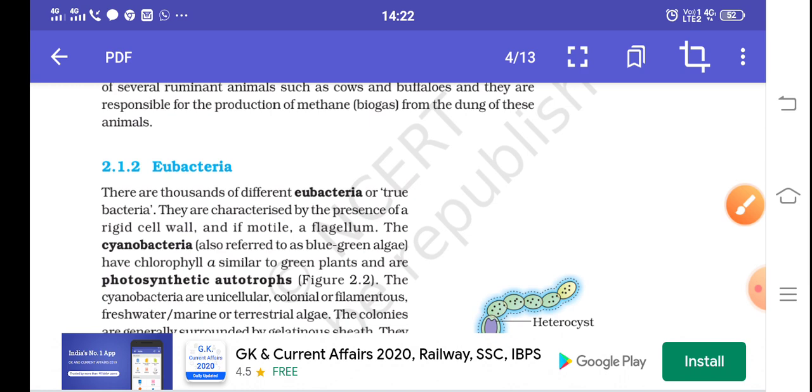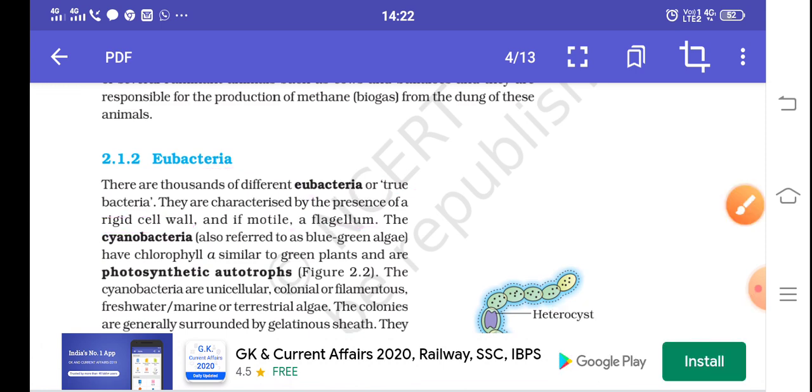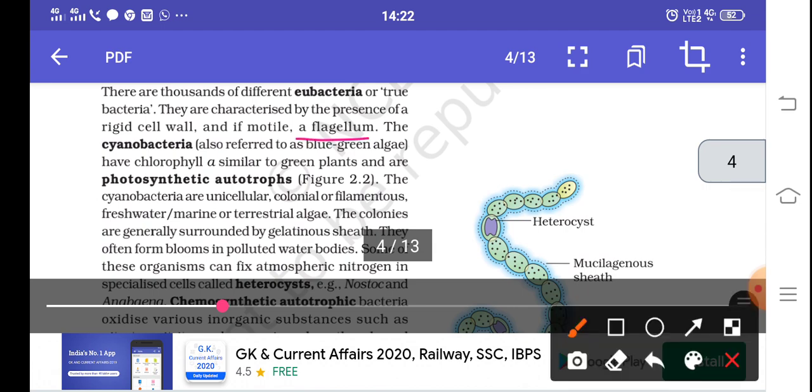Now let us discuss more about Kingdom Monera and the next category is Eubacteria. Eubacteria has a special name, true bacteria. They are the first bacteria with rigid cell wall, motile, and a flagellum. They can move along with flagellum. We also know them as cyanobacteria, the first life evolved on earth. They have blue-green algae which contains chlorophyll A similar to green plants. These are photosynthetic autotrophs and are filamentous.